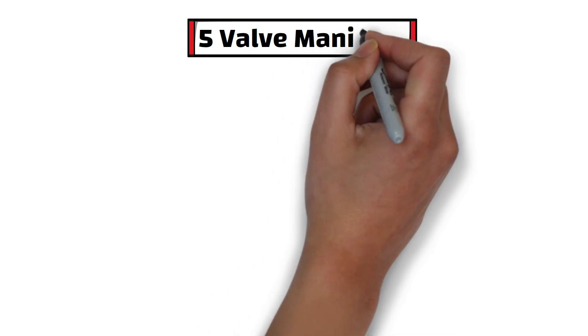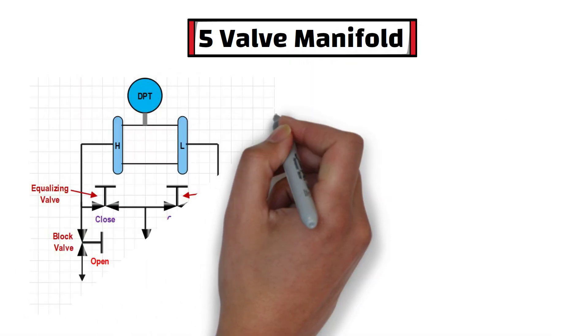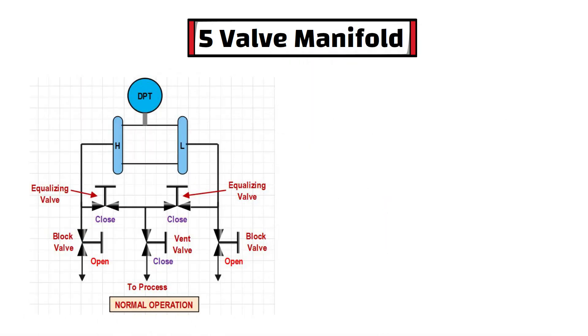Now, let's take an example of five-valve manifold. As you can see in normal operation, both block valve is in open position and both equalizing valve is in closed position. And vent valve also is in closed position.